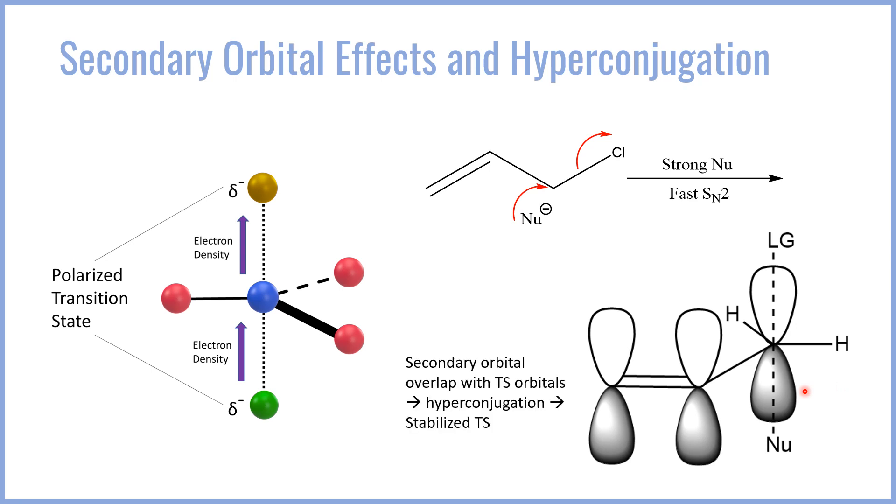So just to summarize, there's a secondary orbital overlap between the pi orbitals and the transition state orbitals which causes hyperconjugation, stabilizing the transition state, and enhancing our reaction rate.